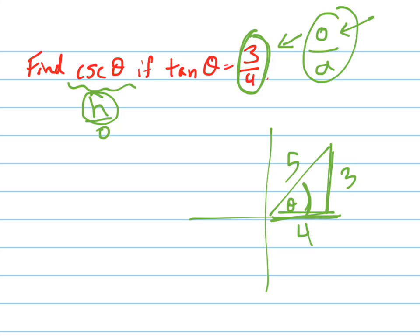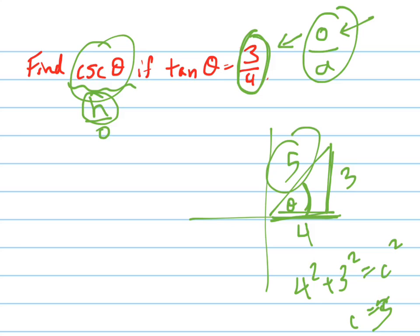If we didn't know that, we could have used the Pythagorean theorem, but we would have gotten 5. C equals 5 — squared is 25. So the hypotenuse is 5. Now let's find the cosecant of theta. The cosecant of theta is the hypotenuse over the opposite, so the cosecant of theta equals 5 thirds.